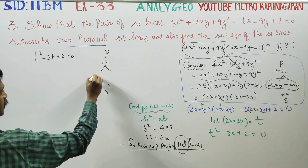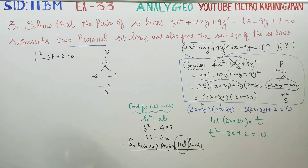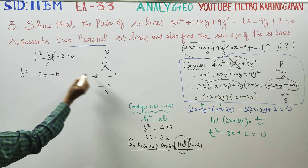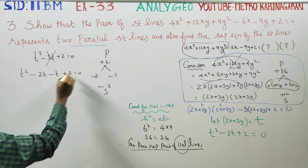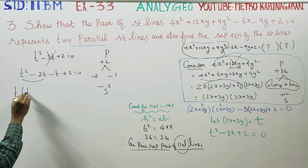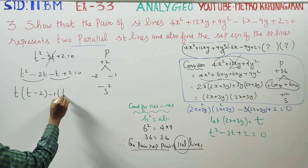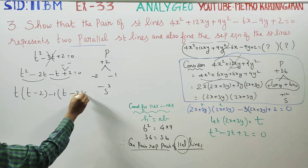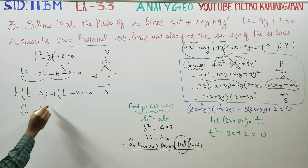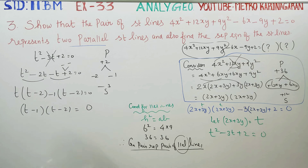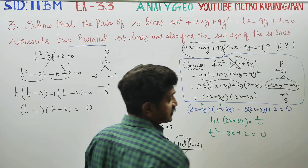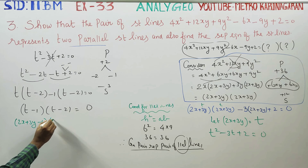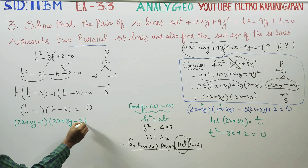Factoring t² - 3t + 2 = 0: splitting as t² - 2t - t + 2 = 0, taking t common: t(t - 2) - 1(t - 2) = 0, giving (t - 1)(t - 2) = 0. Substituting back t = 2x + 3y: (2x + 3y - 1)(2x + 3y - 2) = 0.